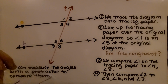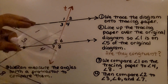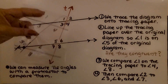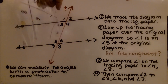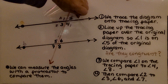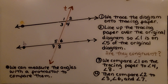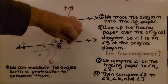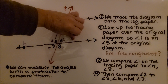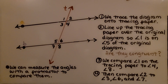Then we compare angle one on the tracing paper to angle four. I can turn this and line it up with angle four — it lines up. We can also line it up with angle eight. Angle one lines up with angle eight; they're the same measure.